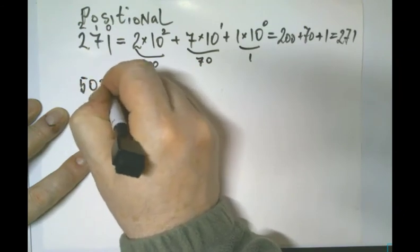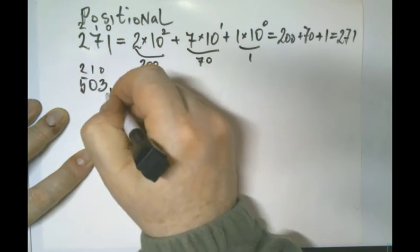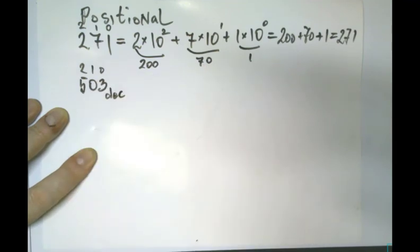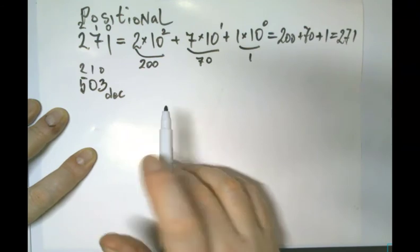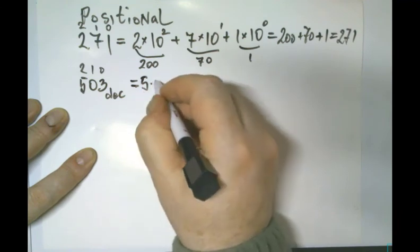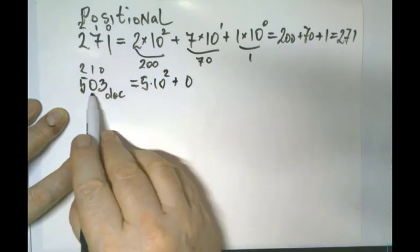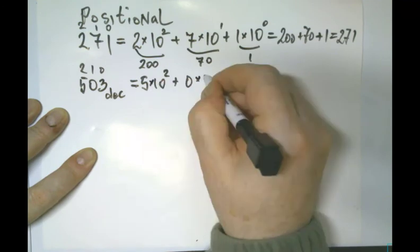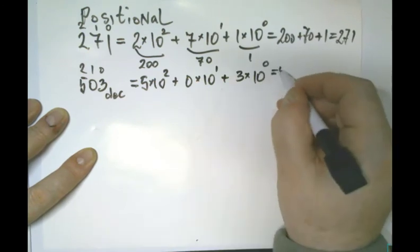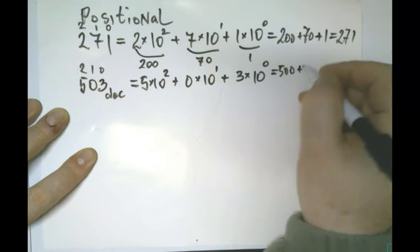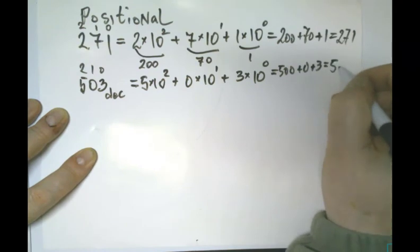Let's make another look at the number 503. Positions: zero, one, two. So in the decimal system — we call the system decimal because we multiply by ten, and ten in Latin is 'deca' or decimal. We go for 5 × 10² plus 0 × 10¹ plus 3 × 10⁰. That will be five hundred plus zero plus three — five hundred and three.